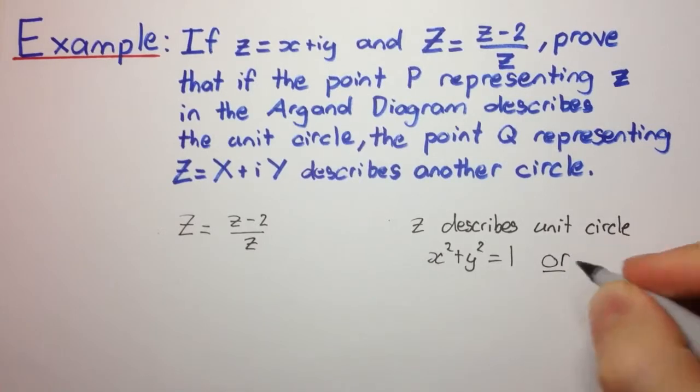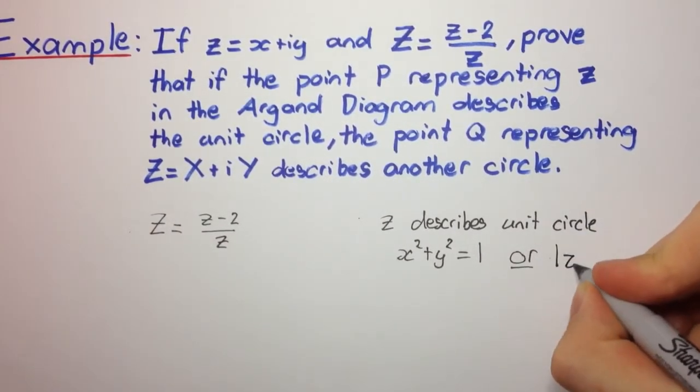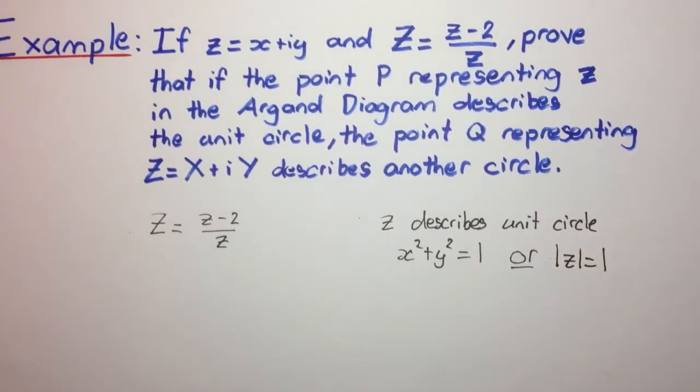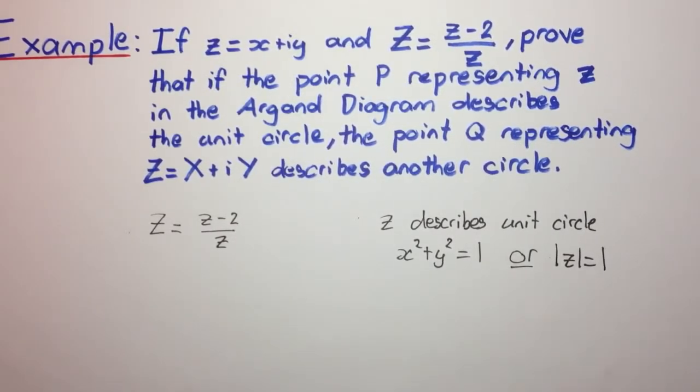Or, we can think of it in this way. The modulus of little z equals 1 because this here represents the unit circle. This here is a way of representing as a locus the unit circle. So now we can use these two facts to help us with our problem.